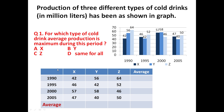To answer this question, let us prepare a table. In 1990, X was produced 42 million litres, Y was 56 million litres, and Z was 64 million litres. Similarly, in 1995, X was produced 46 million litres, Y was 42, and Z was 52. In this manner you prepare a table.